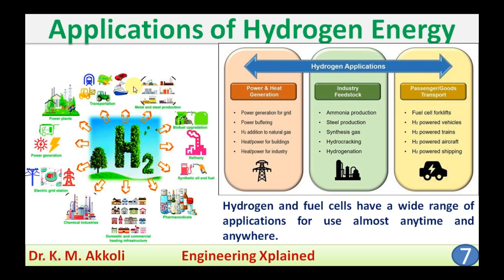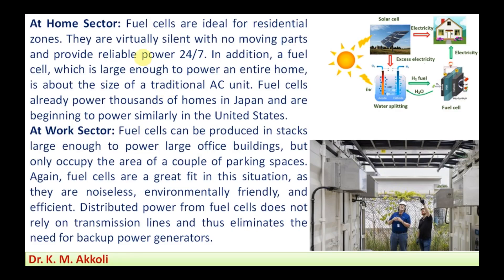These are the wide range of applications we can see — anywhere and everywhere we can use hydrogen as a fuel, produced from any one of the available methods. In the home sector, we can use fuel cells similarly to how we use an inverter. The fuel cell produces hydrogen, which in turn produces electricity that can be used for home applications 24/7. The fuel cell unit is about the same size as a small AC unit at home, making it convenient to use.